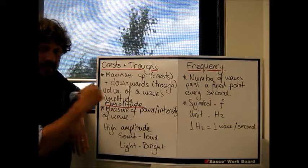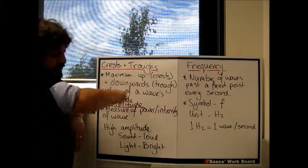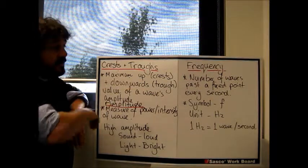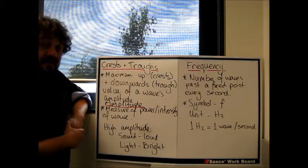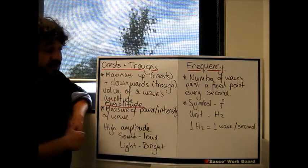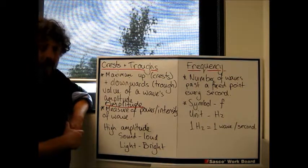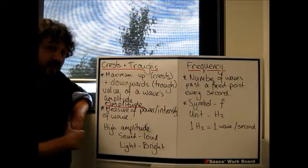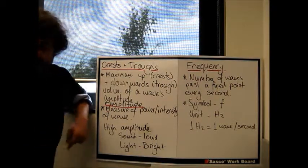The next number is frequency. If you've got a point along that resting position, so that midline, the number of times a wave goes past the fixed point every second, that's its frequency. So the symbol is f and we use hertz, the unit that's H. So one hertz is one wave per second past the point.